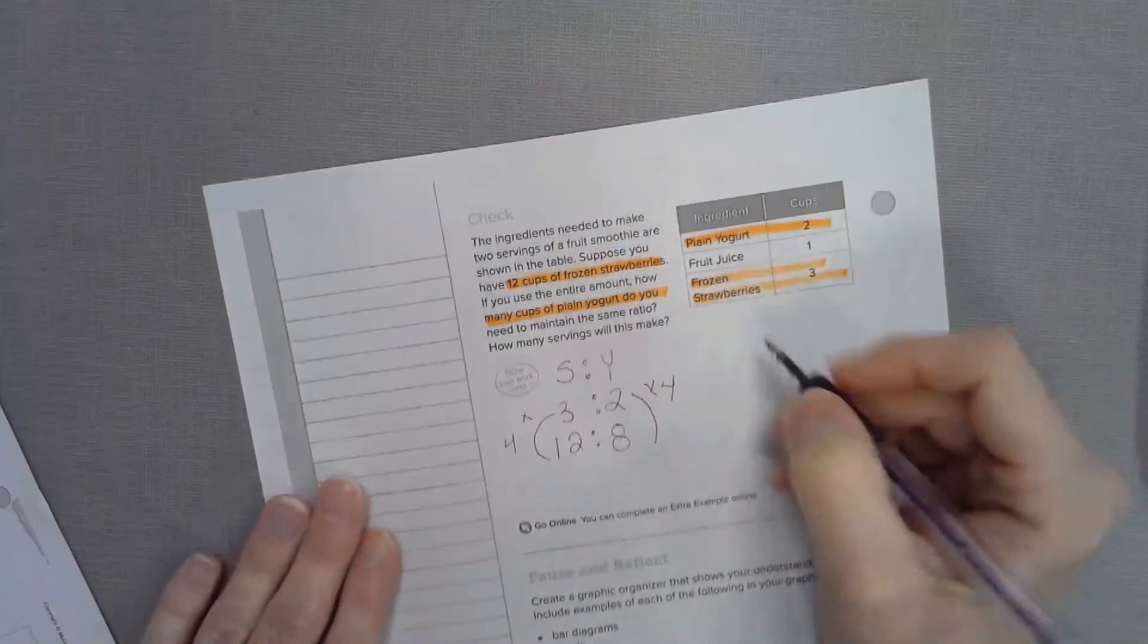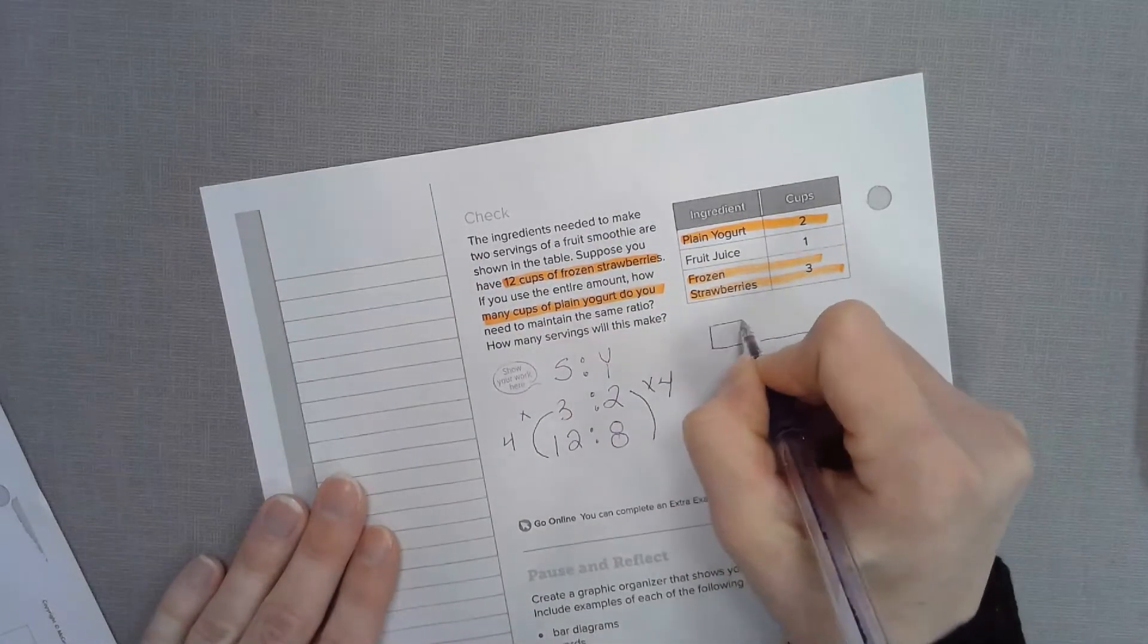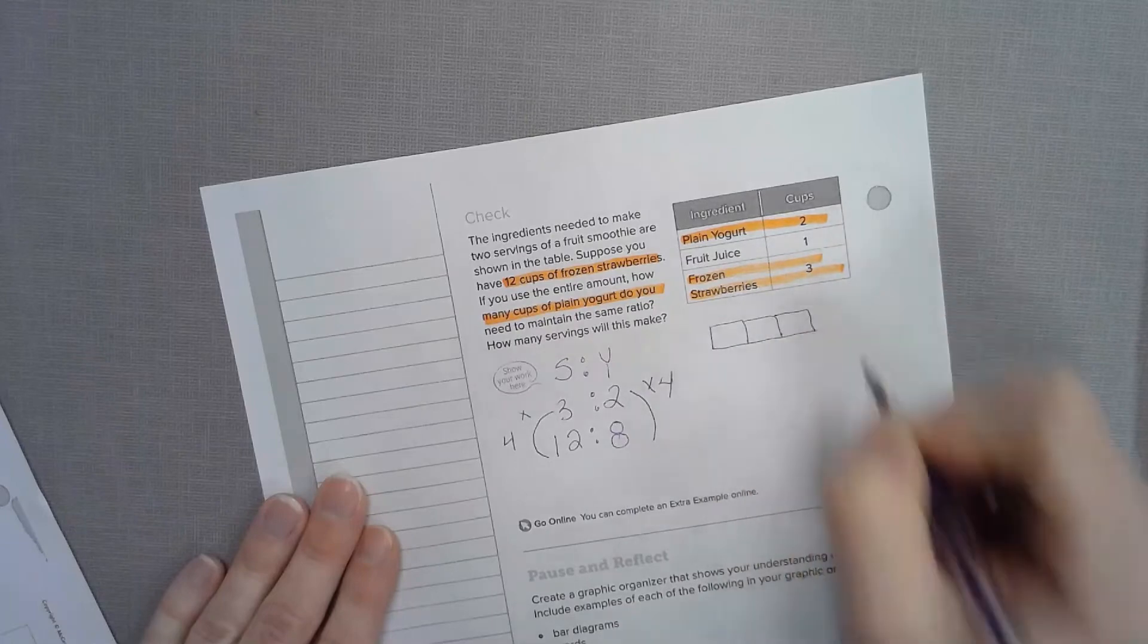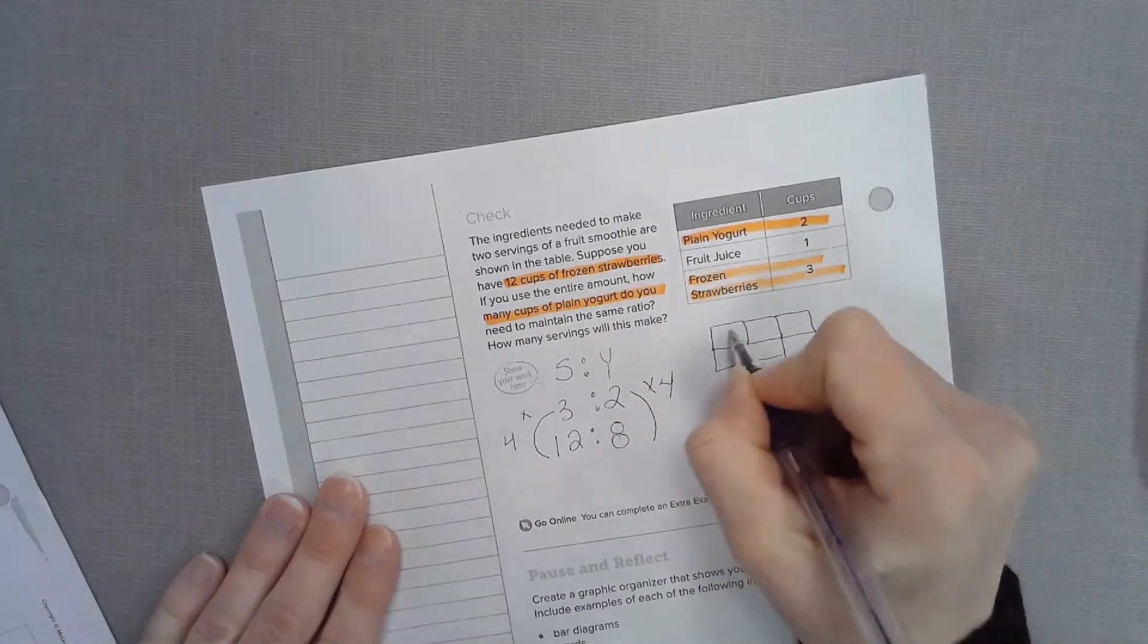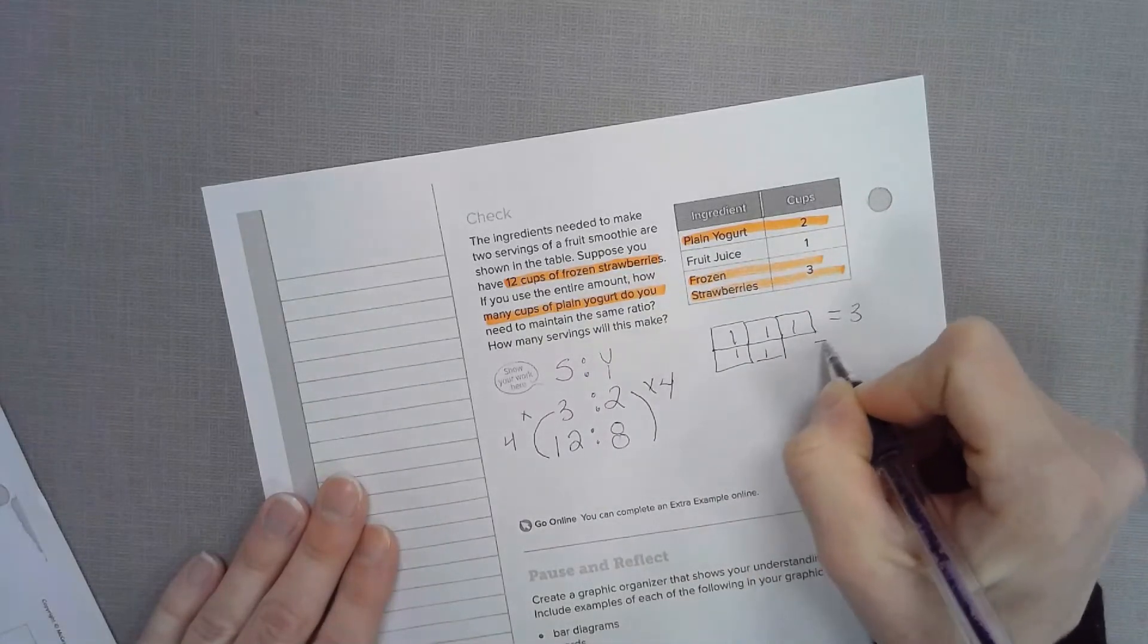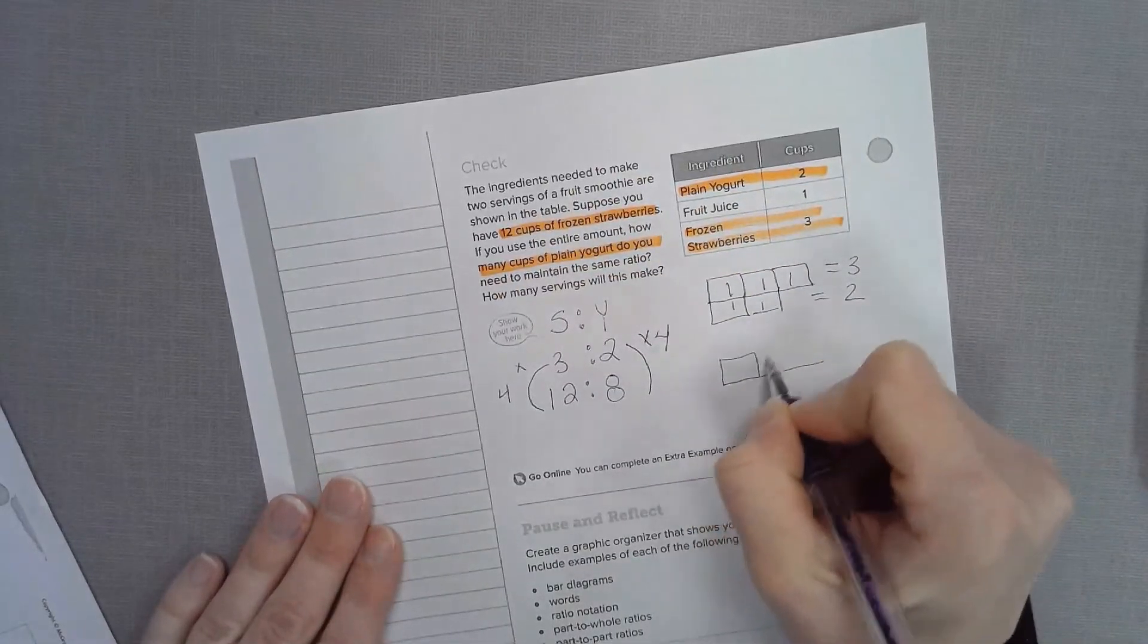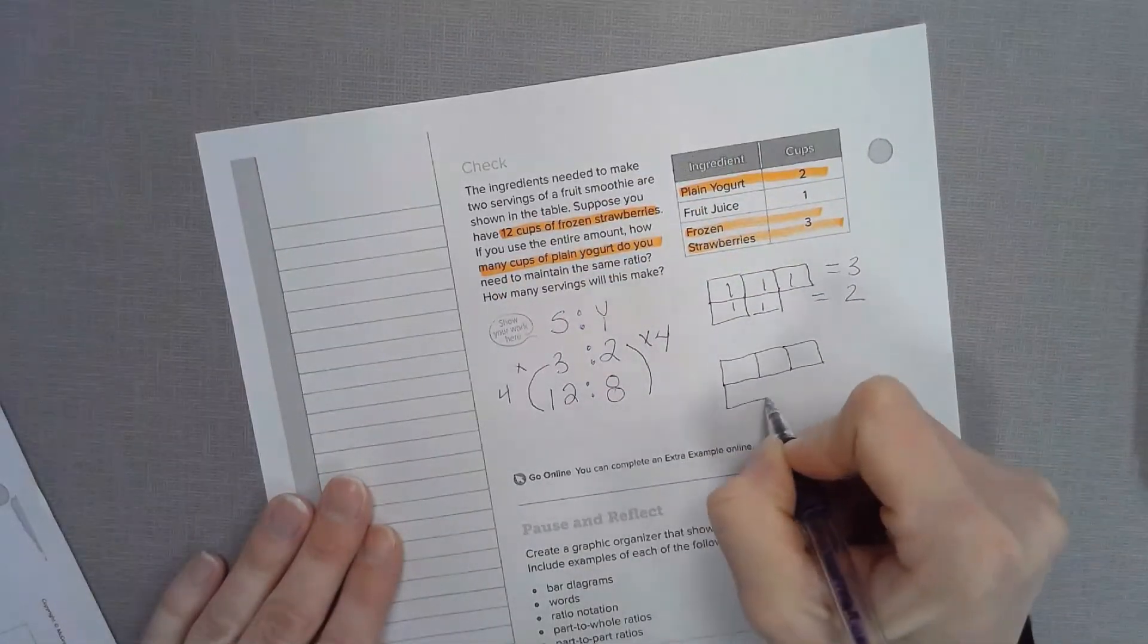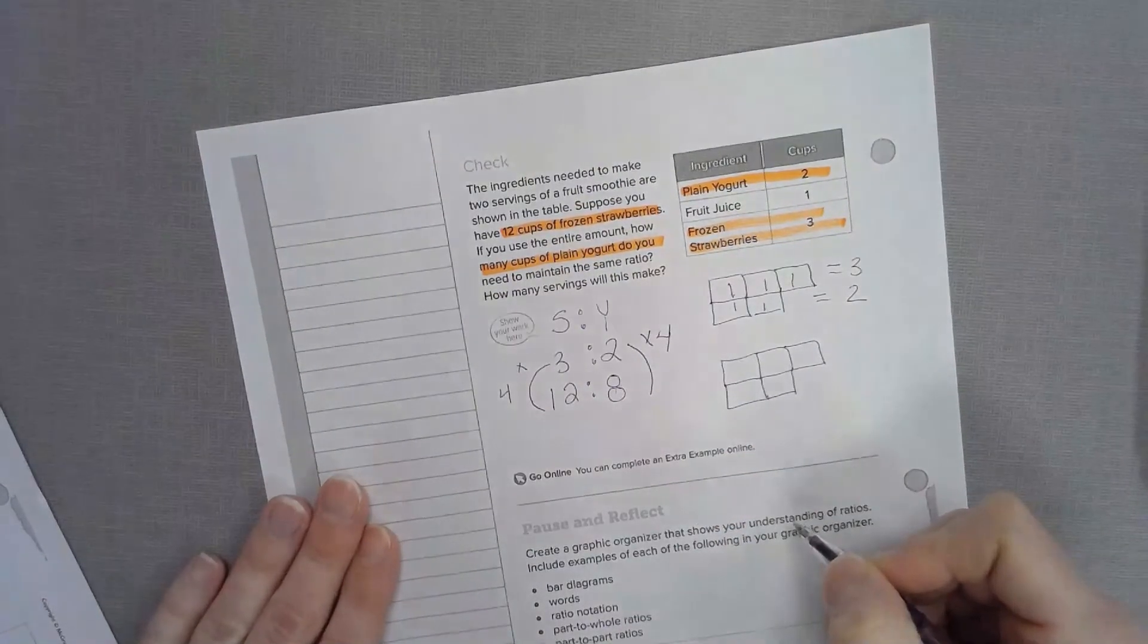Let's draw our bar model. It's a 3 to 2 ratio. So here's our 3 bars to 2 bars. Put a 1 in each of those boxes. And then it shows our 3 to 2. Draw the same boxes. 1, 2, 3.